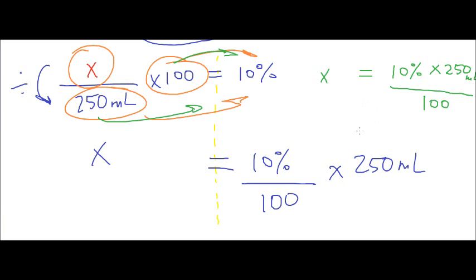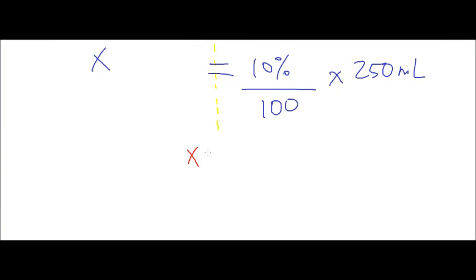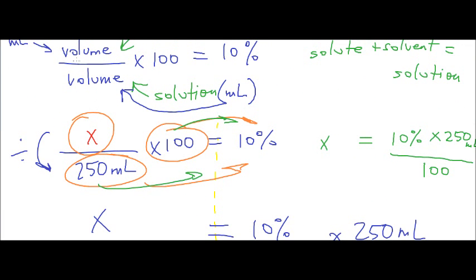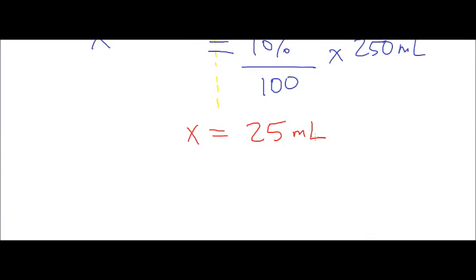When we do 10% times 250 divided by 100, or 10 divided by 100 then multiplied by 250, we get a value for x equal to 25. Our x represents a volume, so the volume is x equals 25 milliliters. I hope, Dawn, this helped clarify some of the questions you may have had. Sorry that it's a 15-minute video, but I hope this will at least clarify things for you and maybe some of your fellow classmates. Good luck.